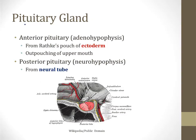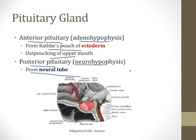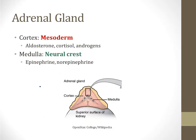The pituitary gland has peculiar embryology. It has an anterior portion called the adenohypophysis and a posterior portion called the neurohypophysis. The anterior portion, which secretes hormones like ACTH and TSH, is a derivative of Rathke's pouch, which is part of the ectoderm — it forms as an outpouching of the upper mouth that grows upward toward the central nervous system. The posterior pituitary is more like a nervous system structure and forms from the neural tube; it secretes ADH and oxytocin.